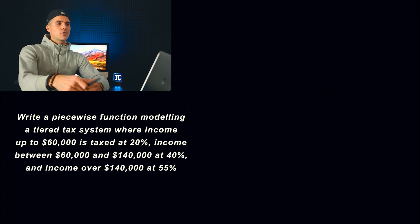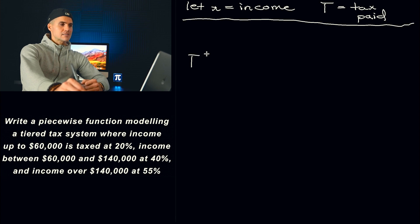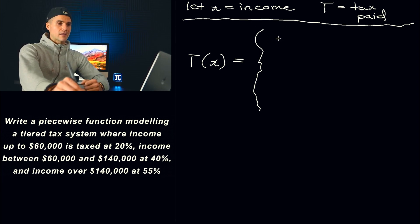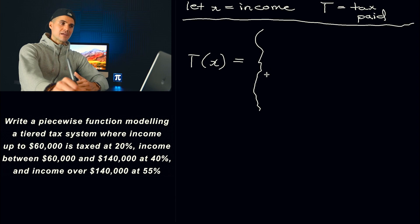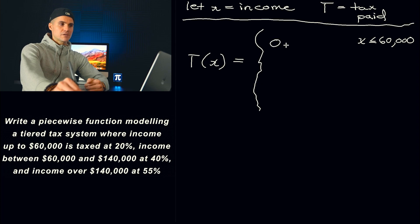To start this off, I'm going to introduce some variables. I let X equal the income, and I'm going to let capital T be the tax that you are paying, depending on which bracket your income is going to be in. So let's create a piecewise function for the tax paid in terms of the income that you make. For the first bracket, the tax up to $60,000 of income is going to be taxed at 20%. So if your income is less than or equal to $60,000, you're paying 0.2x.